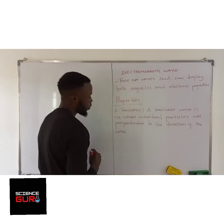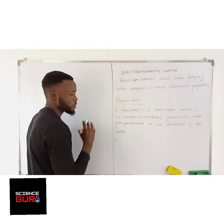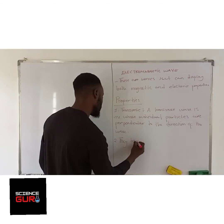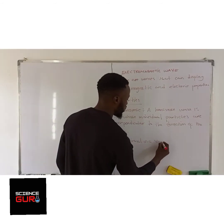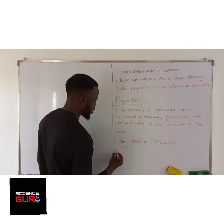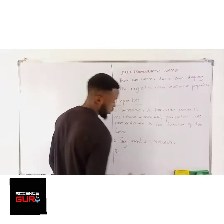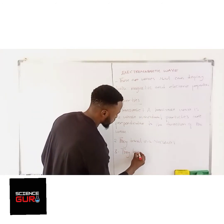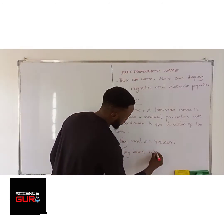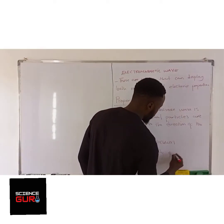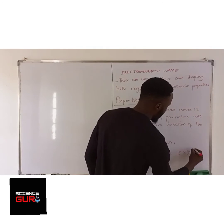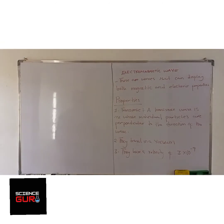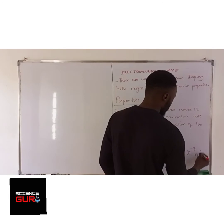Property number two: these waves travel in a vacuum. Property number three: these waves have the same speed — a velocity of three times ten to the power of eight meters per second. That is the velocity of electromagnetic waves.